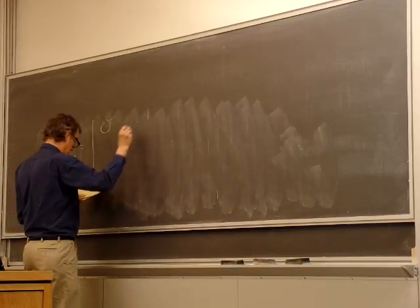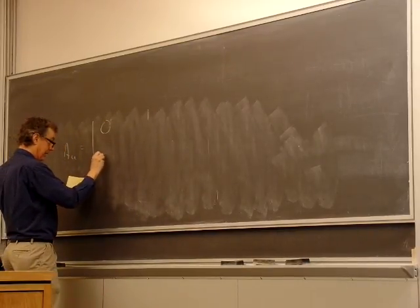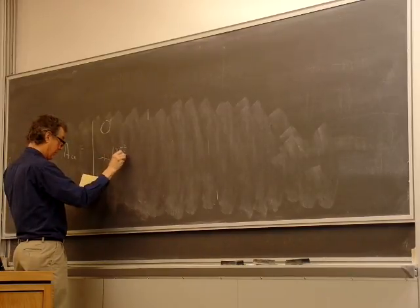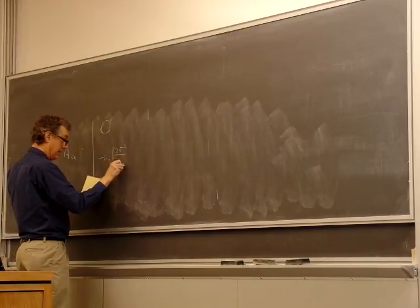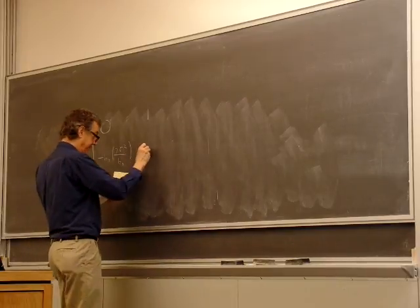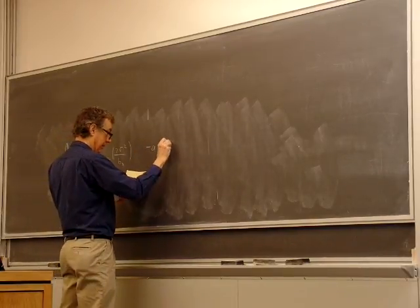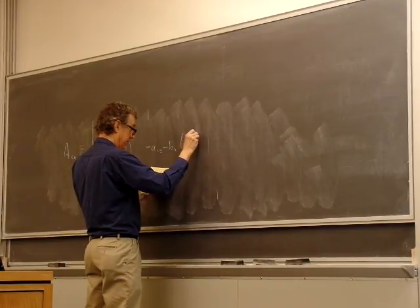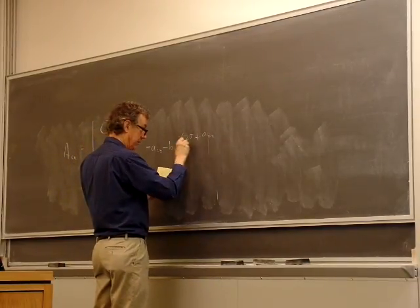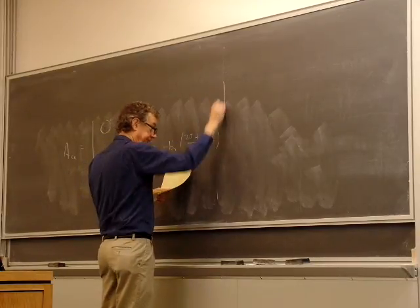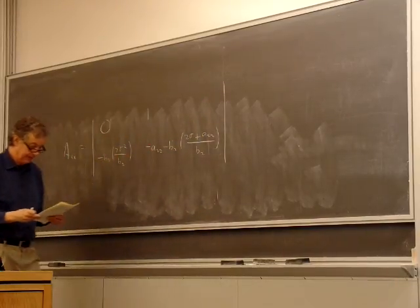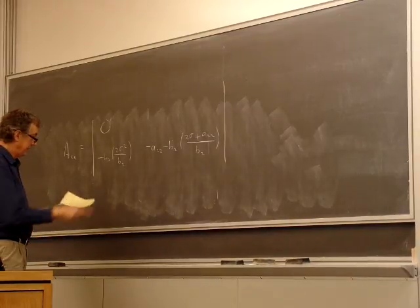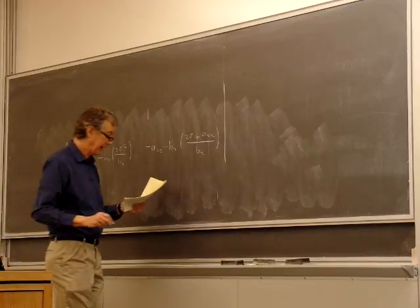Zero, one. This is minus B2, two omega zeta squared over B2. A22 minus B2 times two omega zeta plus A22 over B2.